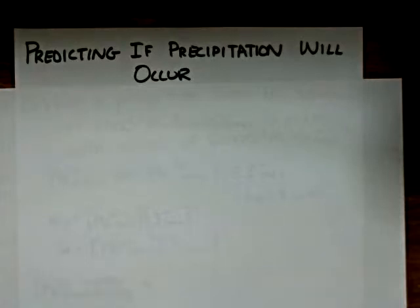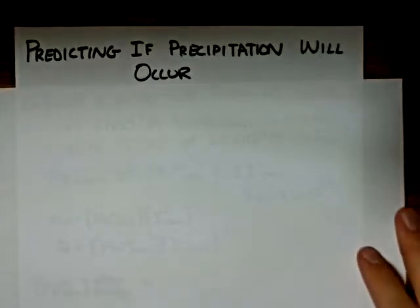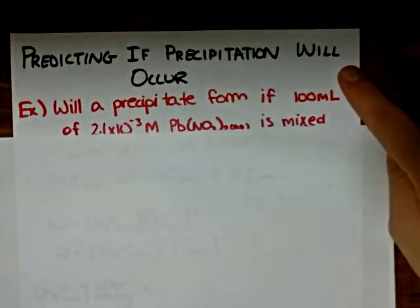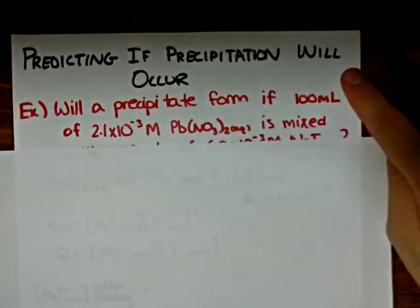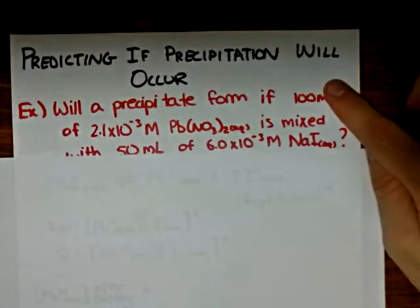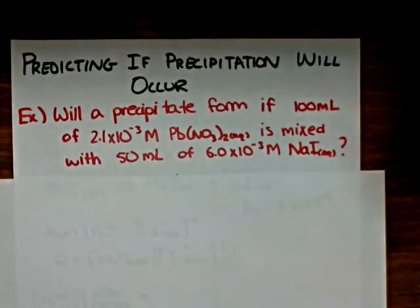In this video, I want to do an example where we predict whether a precipitation will occur when two solutions are mixed. We have 100 milliliters of 2.1 times 10 to the negative 3 molar lead nitrate solution being mixed with 50 milliliters of 6.0 times 10 to the negative 3 molar sodium iodide.